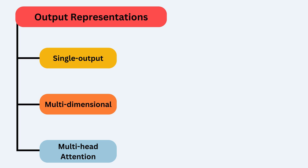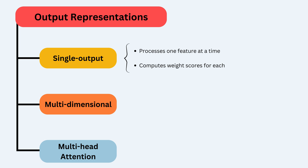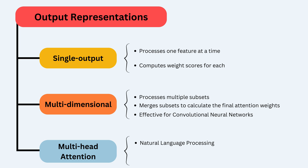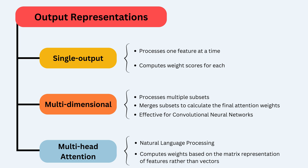Multi-head attention processes inputs linearly in multiple subsets and subsequently merges them to calculate the final attention weights — particularly effective when integrating the attention mechanism with convolutional neural networks. Multidimensional attention, often employed in natural language processing, computes weights based on the matrix representation of features rather than vectors, introducing an alternative perspective beneficial in certain applications.